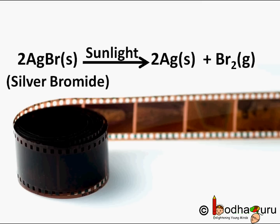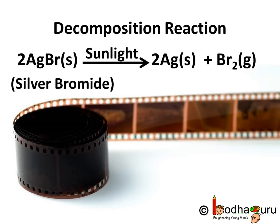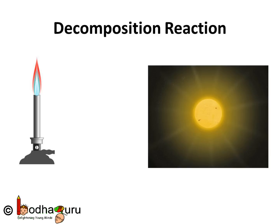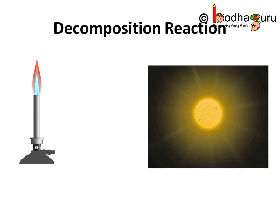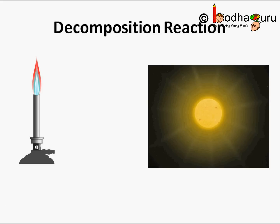Here AgBr is silver bromide, Ag is silver, and Br₂ is bromine. So we say it's a decomposition reaction, as a single reactant breaks down to give simpler products. In such reactions, energy in the form of heat, light, or electricity is required to break down the reactants.